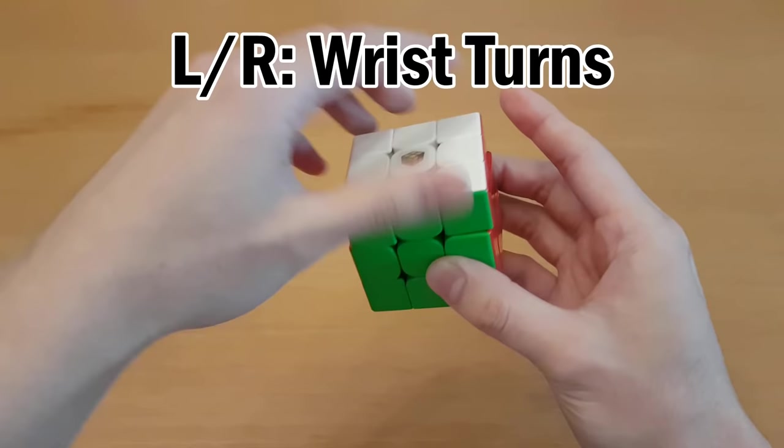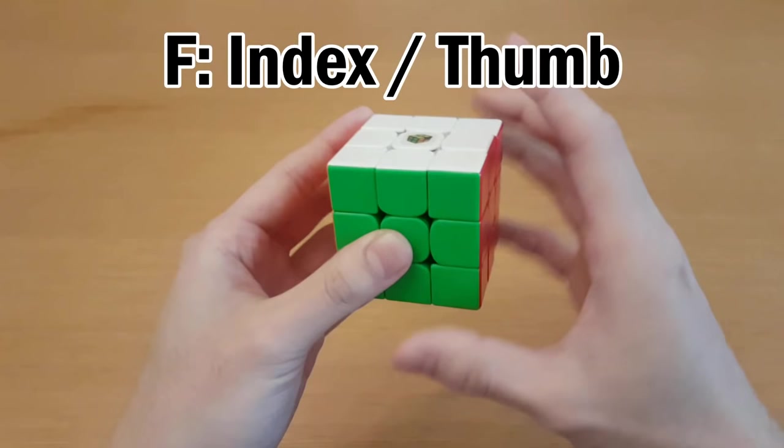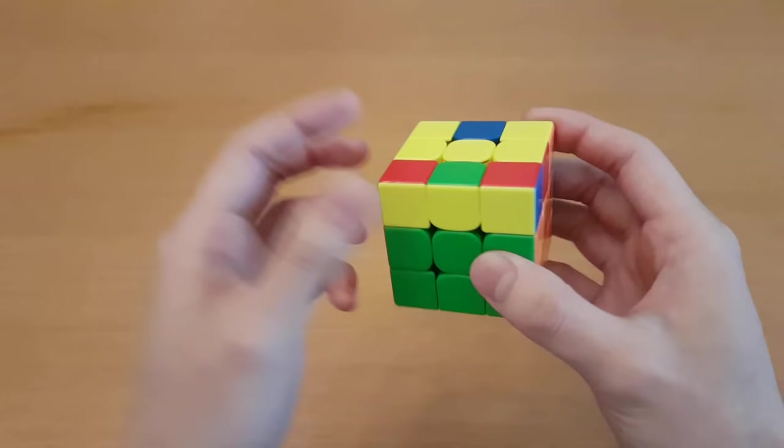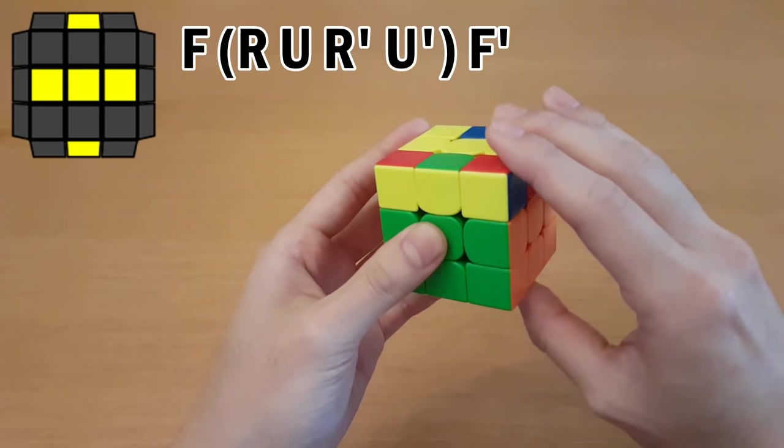No other turn is allowed to be a wrist turn. Instead, you turn the top with your index fingers. You turn the bottom with your ring fingers. The front can be done with index finger or thumb with either hand depending on the situation. With just those simple turning techniques, you can do a lot of algorithms quite quickly.